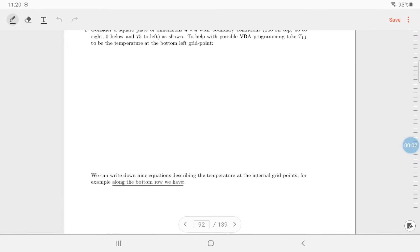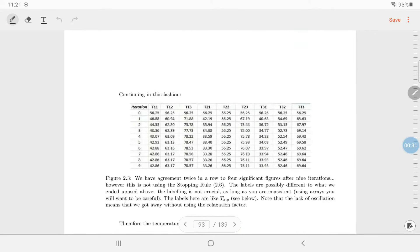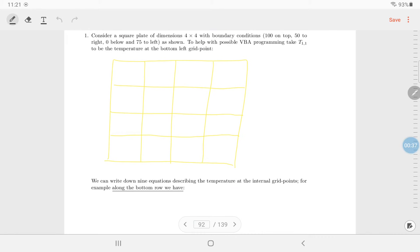And let's do some work. Let's do some examples. So consider a square plate of dimensions 4x4. Now I'm going to use slightly different labeling as suggested in the question. I think it's the right thing to do because I want to set you up properly for probably the way to do it in VBA.